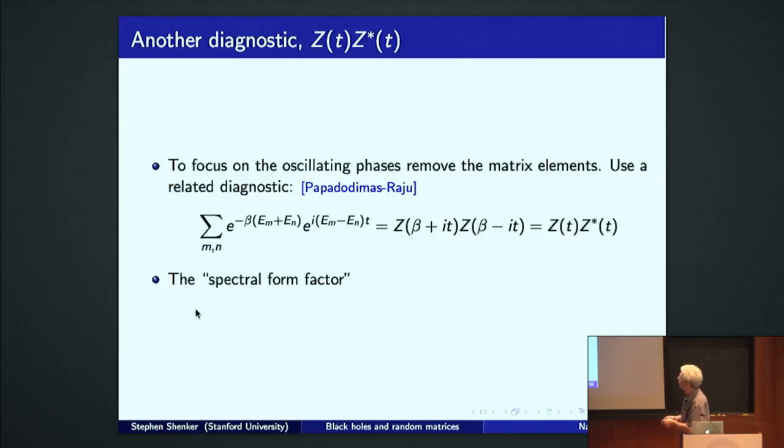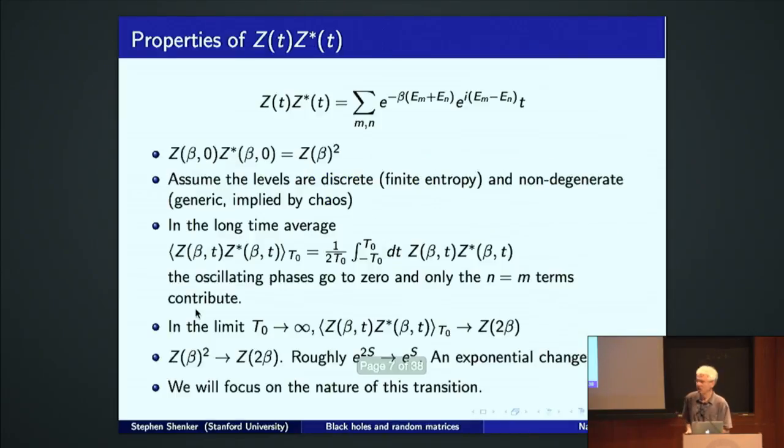In the context of black holes, this quantity is introduced by Papadodimus and Raju. It's very closely related to something that's been studied a long time in the quantum chaos literature called the spectral form factor. And sometimes I'll drop into this language. So this is what we want to study. It clearly has whatever is going on in these oscillating phases contained in it.